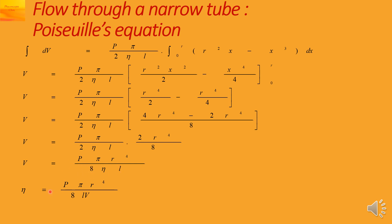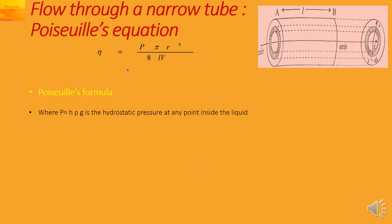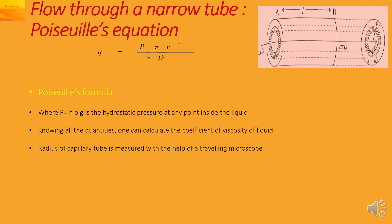Rearranging gives the coefficient of viscosity eta equal to P pi R to the 4 upon 8 L V. This is Poiseuille's formula, where P equals h rho g is the hydrostatic pressure, R is the radius of the capillary tube measurable using a traveling microscope. Knowing these quantities, we can calculate the coefficient of viscosity of the liquid.